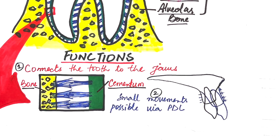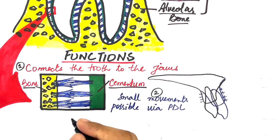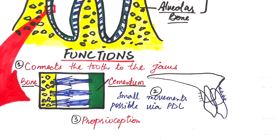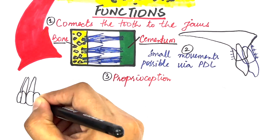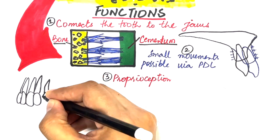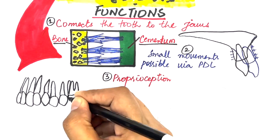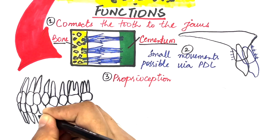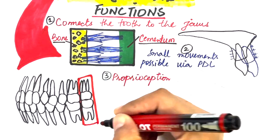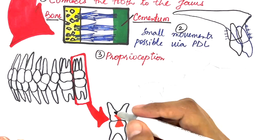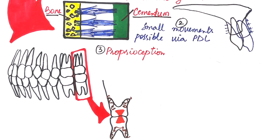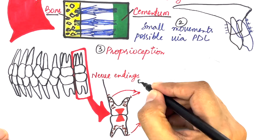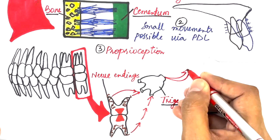PDL also has another important function, which is a sensory one known as proprioception. Tooth enamel is an inner tissue and therefore insensitive, yet the moment teeth come into contact with each other, we know it. Part of this sense of discrimination is provided by sensory receptors within the PDL, which transmits the proprioceptive stimulus to the brain via the trigeminal ganglion.